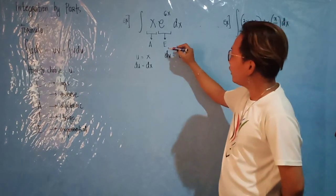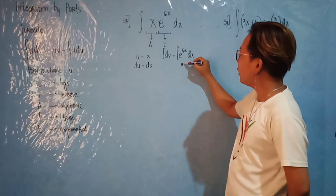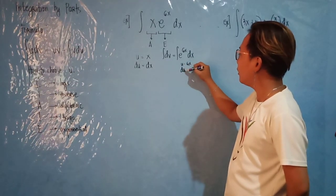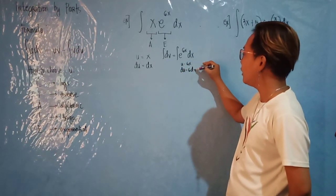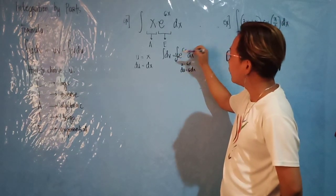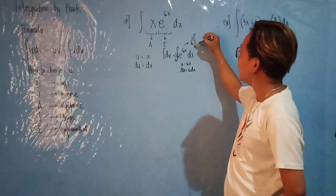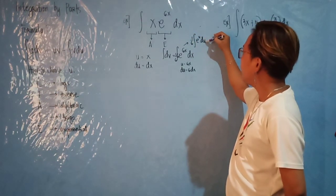Now you have to integrate the dv to get the value of v. By setting your u as 6x, then du is just 6 dx. You will have to insert 6, then balance by 1 over 6. This will become 1 over 6, the integral of e raised to u, du.